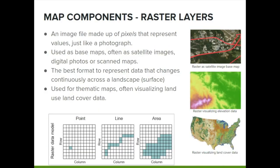The second data type is a raster format, which are image files made up of pixels — think of them as photographs. Raster layers are often used as base maps, such as satellite images, scan maps, or even land use land cover data. Raster provides the best format to represent data that changes continuously across the landscape, such as rainfall or elevation.